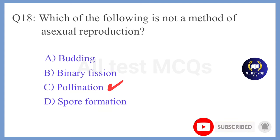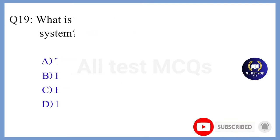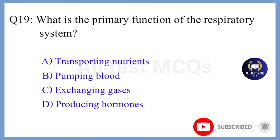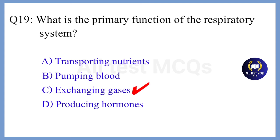Question 19. What is the primary function of the respiratory system? The correct answer is Option C. Exchanging gases.